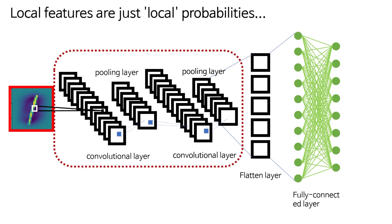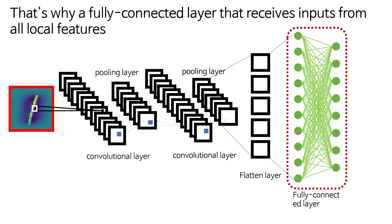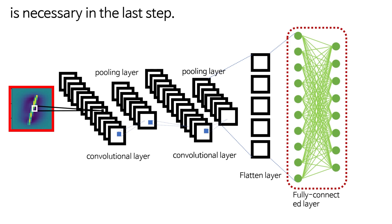Local features are just local probabilities. To calculate the final probability, the entire image must be considered. That's why a fully connected layer that receives inputs from all local features is necessary in the last step.